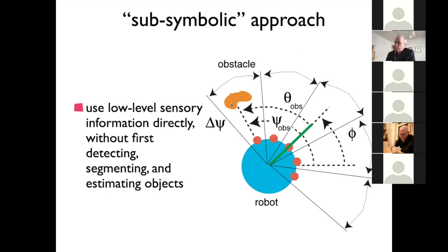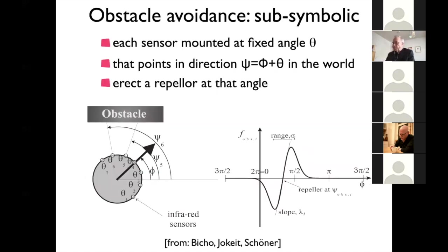You could easily think of extracting sensory parameters like the angular range and the distance as parameters that modulate these forcing functions. Here is a concrete implementation — this is old work from Estela Bishu. In this instance we had seven such sensors. For every sensor, the angle it points in the world is computed from the heading direction and the angle at which the sensor is mounted on the vehicle — they are mounted at fixed angles. Adding these two you can compute where it points in the world.